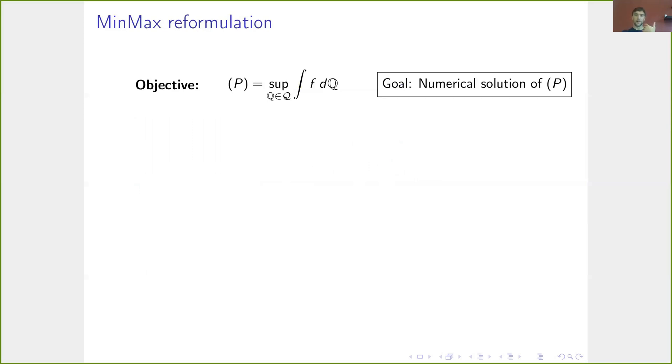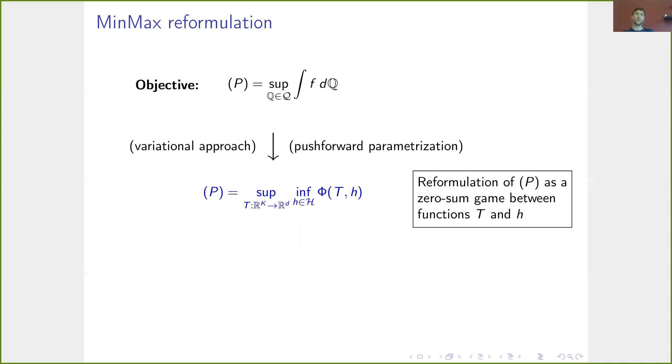So applying this approach with such a push-forward parameterization for this problem P leads to a min-max problem. How's this done? Well, we make this push-forward parameterization approach. First of all, we represent these measures Q as the push-forward map of some latent distribution θ under the map T.